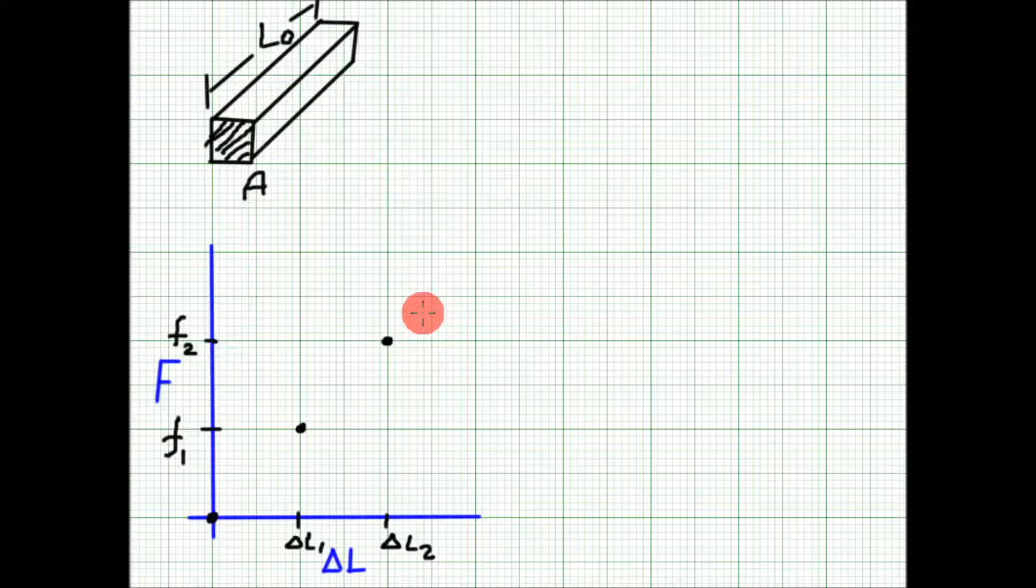If we get double the change in length for double the force applied, then this is a linear elastic material and we'll get a straight force versus change in length curve. The slope of this curve, F divided by delta L, will be the equivalent spring constant K of this bar.